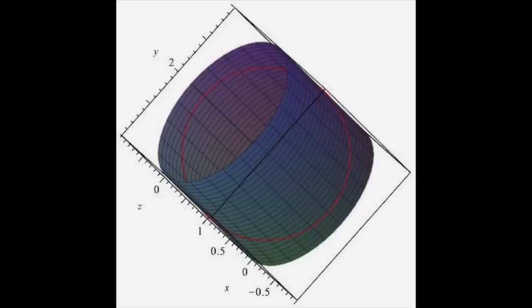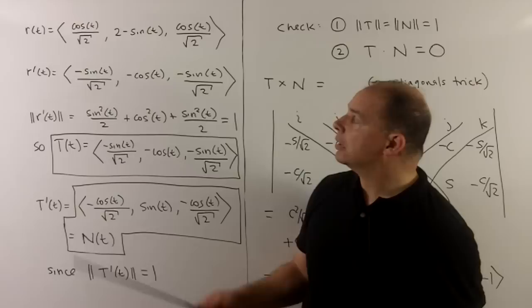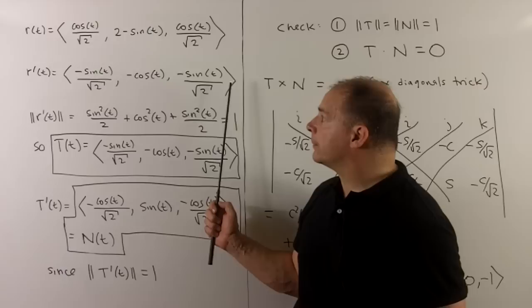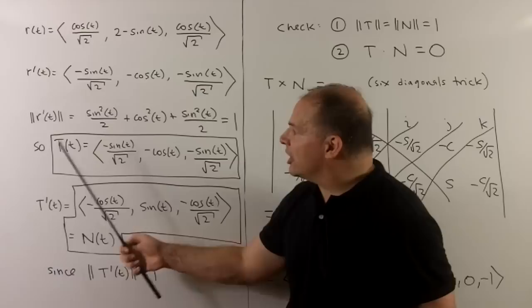Let's calculate. Recall if we take the derivative of a vector function, we're just taking derivatives term by term. So here, cosine goes to minus sine, sine goes to cosine, cosine goes to minus sine. If we take the length of this vector, we get one. So the unit tangent is just r'(t).